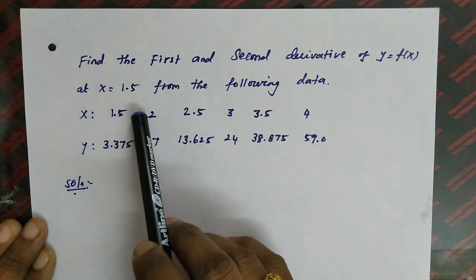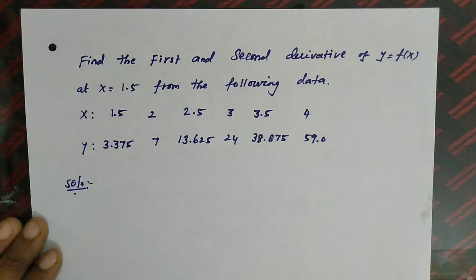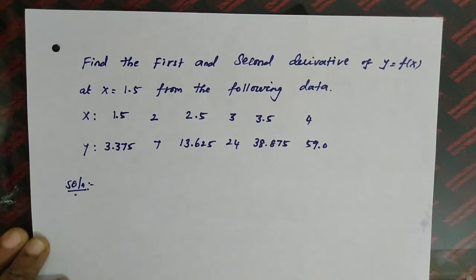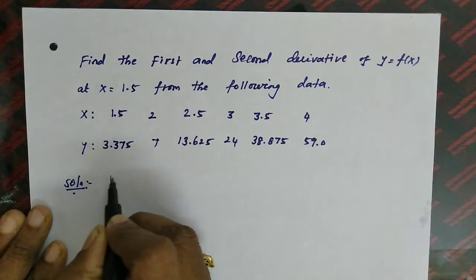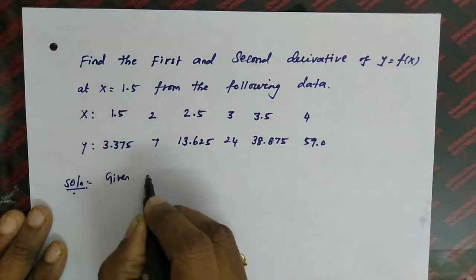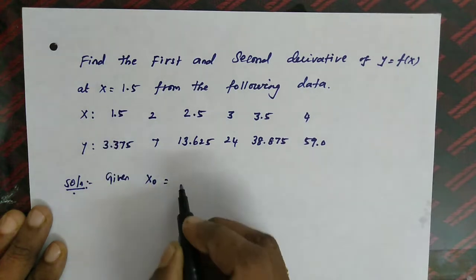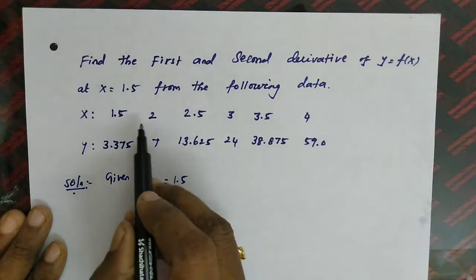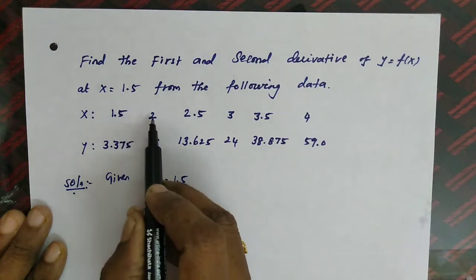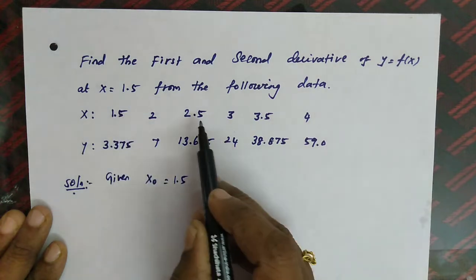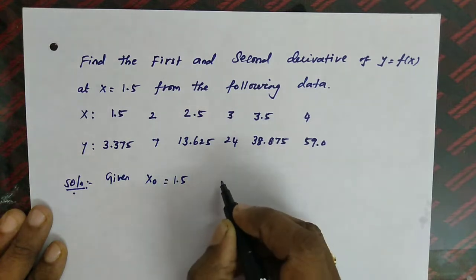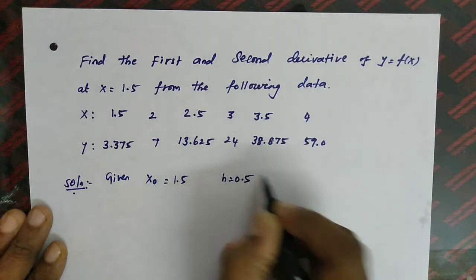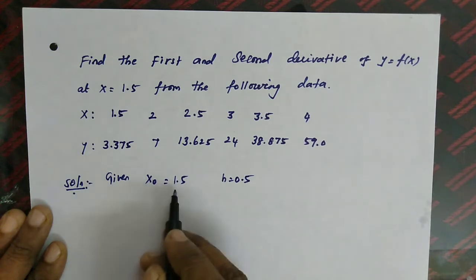In this problem we are going to use Newton's forward difference formula. First we will identify x₀, h, and p from the given data. The first value of x is our x₀, so x₀ is 1.5. H is the difference between the x data: 2 minus 1.5 equals 0.5, 2.5 minus 2 equals 0.5 — so h is equal to 0.5.